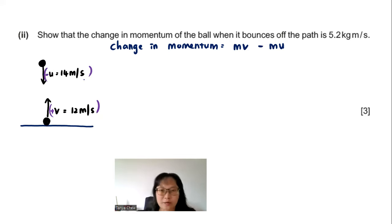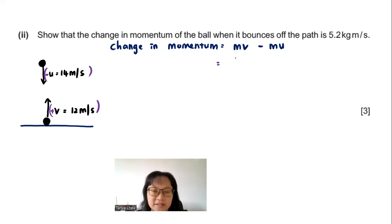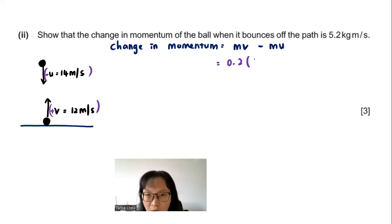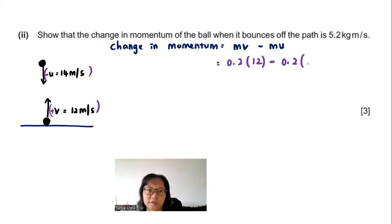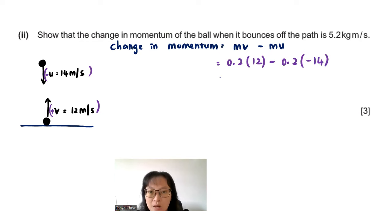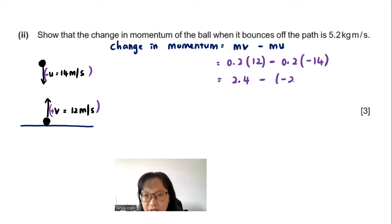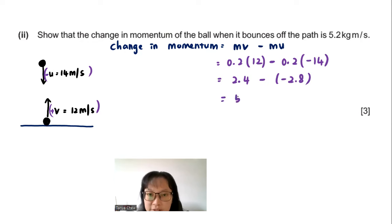Change in momentum = 0.2 × 12 (positive, upward) minus 0.2 × (−14) (negative, downward). This gives 2.4 minus (−2.8). Negative times negative gives positive, so the result is exactly 5.2 kg·m/s.